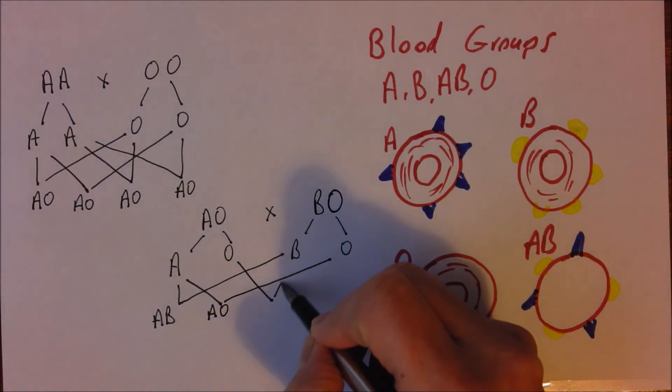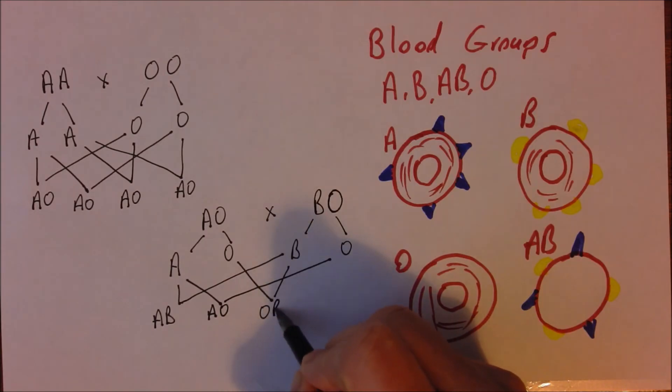O could combine with B giving us OB. And again because the B is dominant over the O, that person will have blood group B phenotypically.